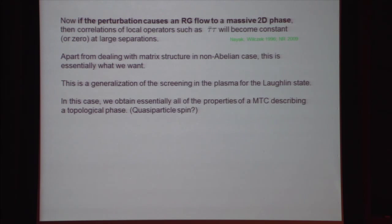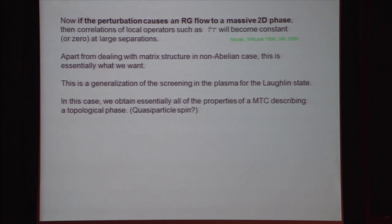This is a generalization of the screening that occurs in the plasma for the Laughlin state. From this we obtain most of the properties describing a modular tensor category for a topological phase — many of which we get for free because the mathematical structures like fusion are already present in the conformal field theory. What we don't get for free is adiabatic transport of quasiparticles. We have monodromy, and we have to show it gives the same effect as the monodromy in the conformal blocks, which I've argued under the generalized screening hypothesis.